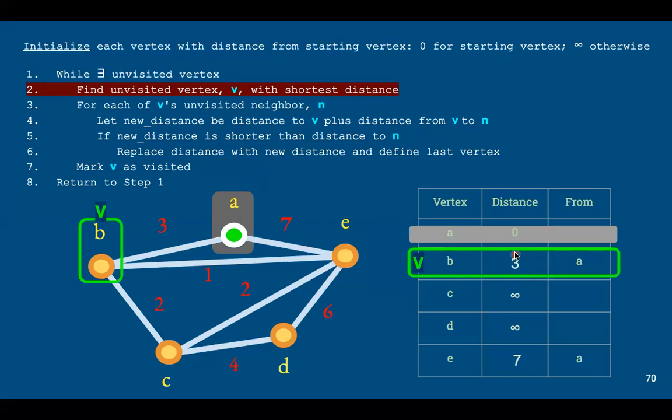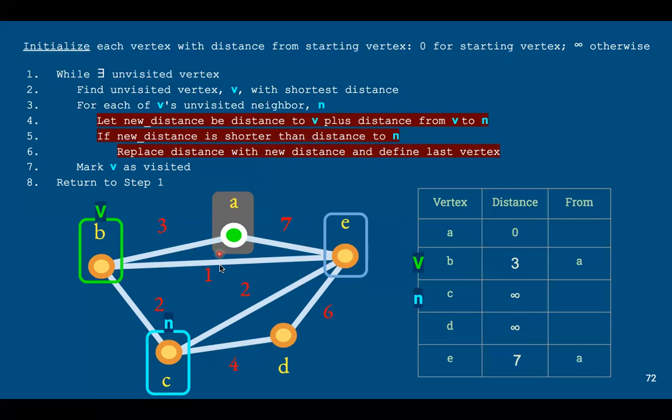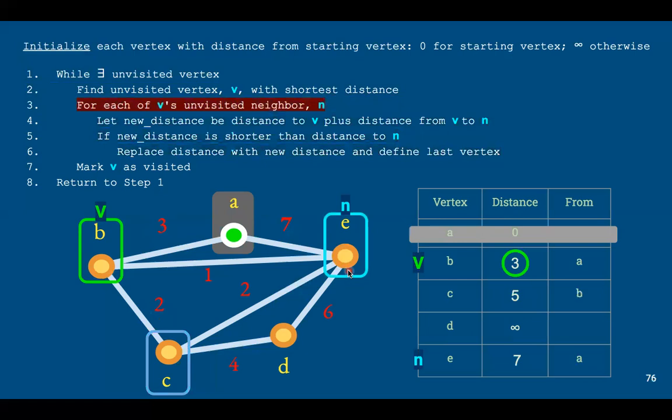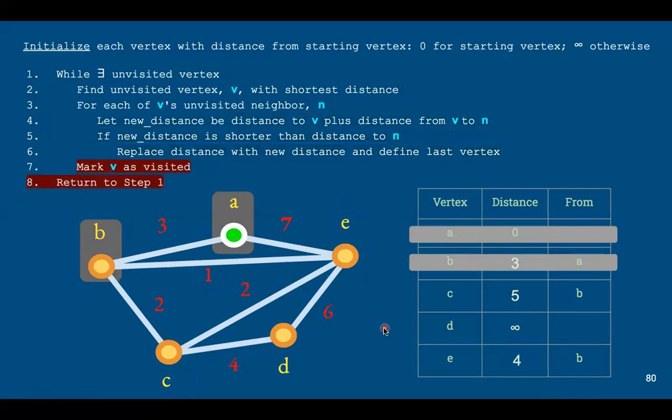Using the greedy algorithm, we find the unvisited vertex with the shortest distance now. B is the closest one with the distance of three. We iterate through its neighbors that are unvisited—C and E. We go to C, define a new distance to be the distance from B to A, that's the sub-path, and we add the distance from C to B. It's better than what C has now, which is infinity, so we replace that with the shortest path, which is a distance of five, and it comes from vertex B. We do the same thing with vertex E, which right now has a distance of seven. We look at the distance from B to the starting vertex, which is three. We add the cost of E going to B, so that's three plus one, that's four. That's better than seven, so we replace seven with four, and now we change the from vertex from A to B.